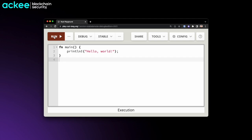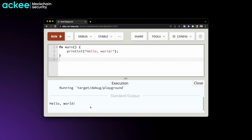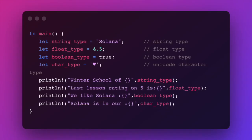We have our Hello World demo already in the Playground and we can just run it and see the output directly in the browser. Now, in this slide we can see that we can define variables in Rust using a `let` keyword. Keep in mind that Rust is a statically typed language, meaning the compiler needs to know the variable types at compile time. However, we are not explicitly defining what types those variables are.